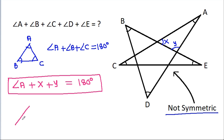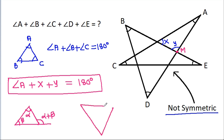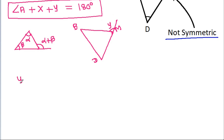And in any triangle, if this angle is alpha and this angle is beta, then the exterior angle will be alpha plus beta. So here, in triangle BD — suppose this point is M — the angle at M is Y. So Y will be equal to angle B plus angle D.